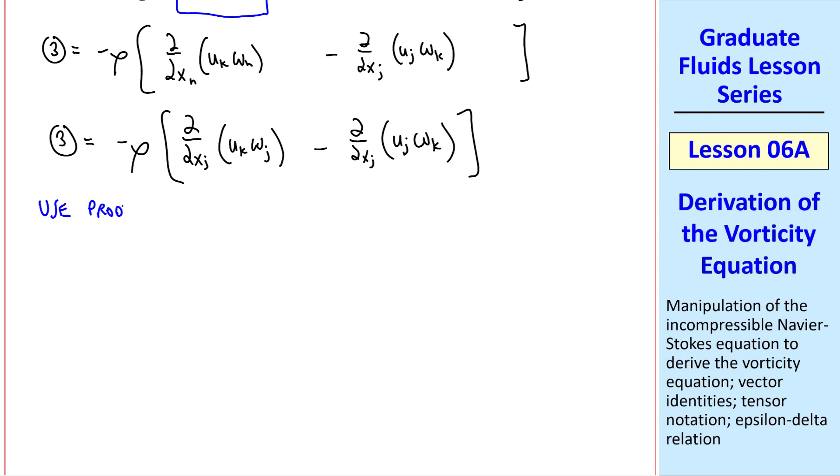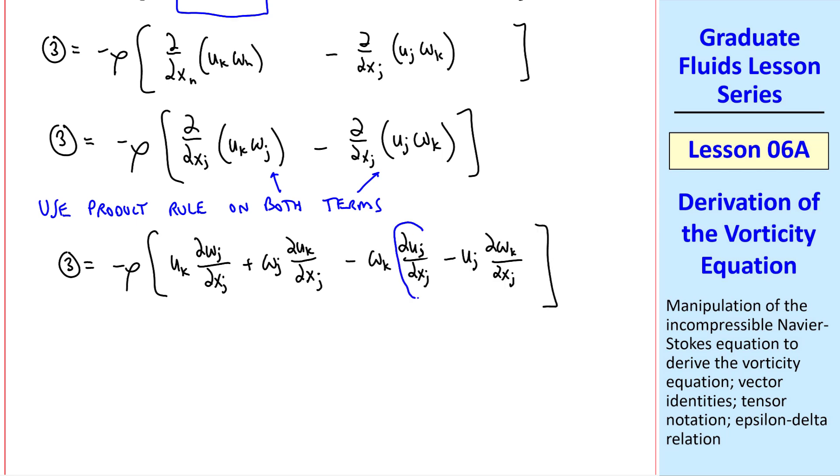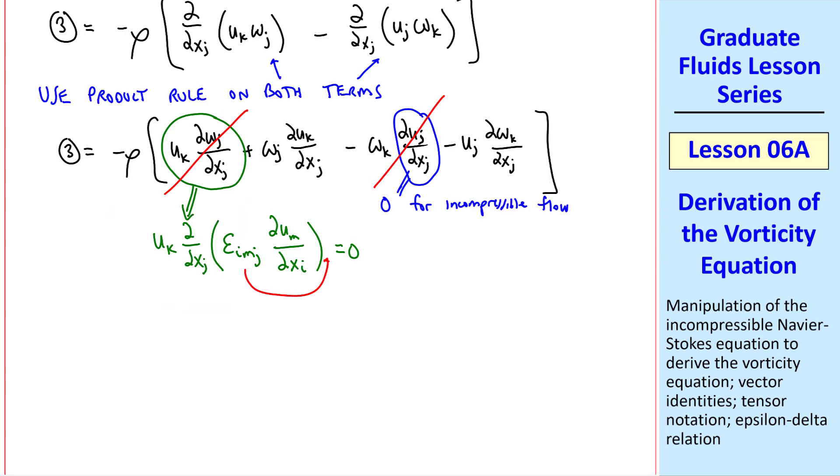Now let's use the product rule on both of these terms. The first one splits up to uj del omega j del xj plus omega j del uj del xj. And the second one splits up similarly. But notice that this term is zero for incompressible flow, which is what we are considering in this lesson. So that term goes away. Let's examine this term in more detail by writing out omega j. Choosing our indices wisely, we'll let omega j be epsilon imj del u m del xj. Now move the epsilon outside of the derivative. Now let's make a similar argument as we did before. The two derivatives are symmetric in i and j, but epsilon is anti-symmetric in i and j. So this term is zero. And we're left with just these two terms.